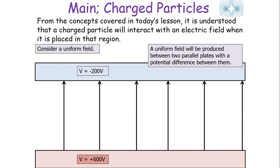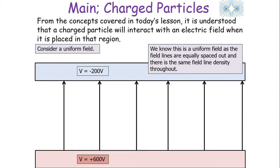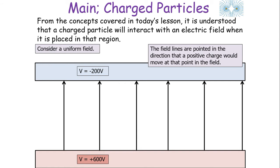When a charged particle moves through an electrical field, it will interact with that field. A uniform field is produced between two parallel plates with a potential difference between them. We know this is a uniform field as the field lines are equally spaced out, with the same field line density throughout. The field lines point in the direction a positive charge would move — towards the more negative plate.